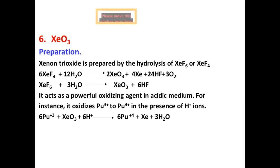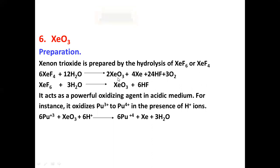Now we will discuss xenon trioxide — how to prepare xenon trioxide. Xenon trioxide is prepared by the hydrolysis of xenon hexafluoride and xenon tetrafluoride. Xenon tetrafluoride reacts with water and forms xenon trioxide, xenon hydrogen fluoride, and oxygen.